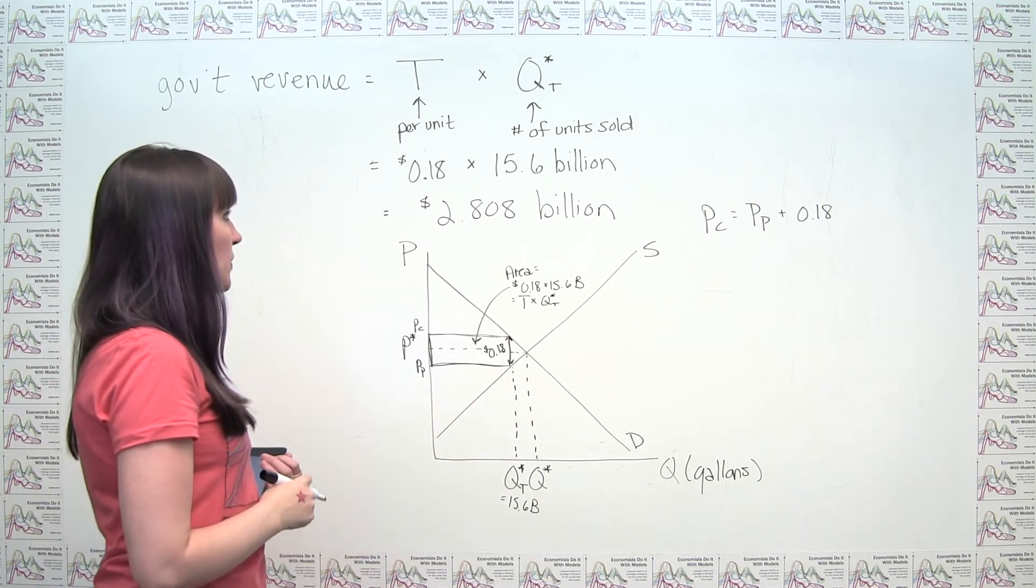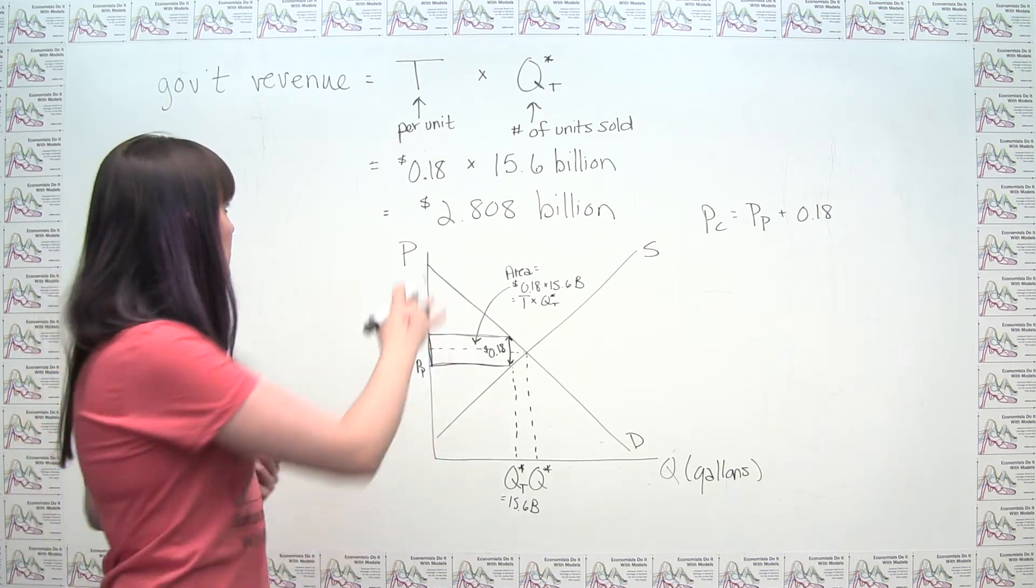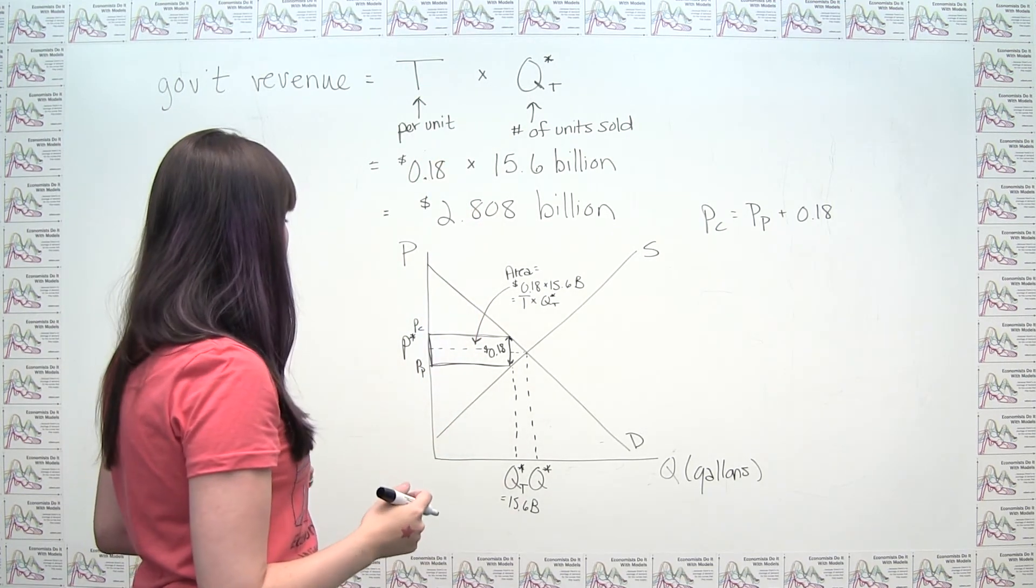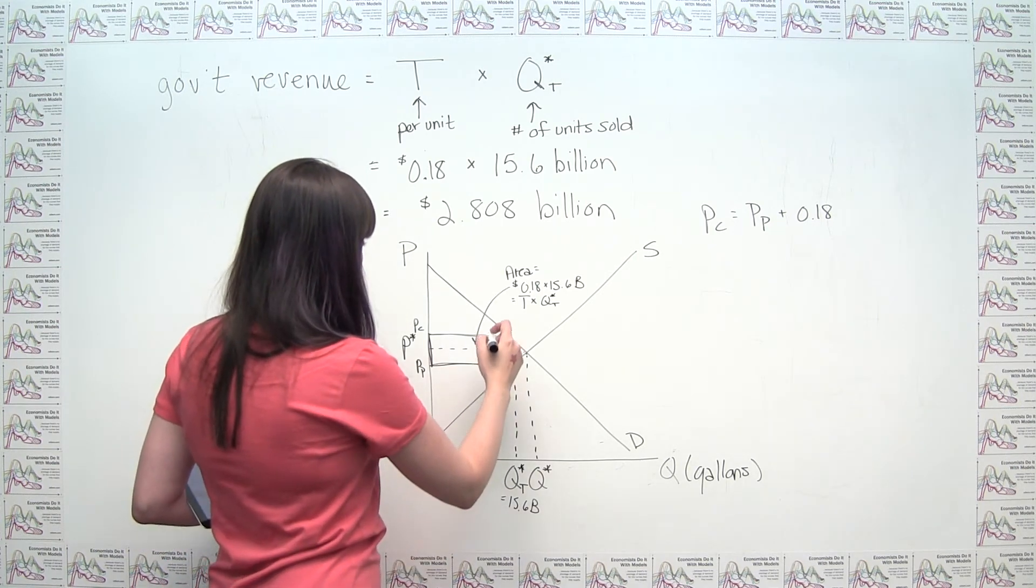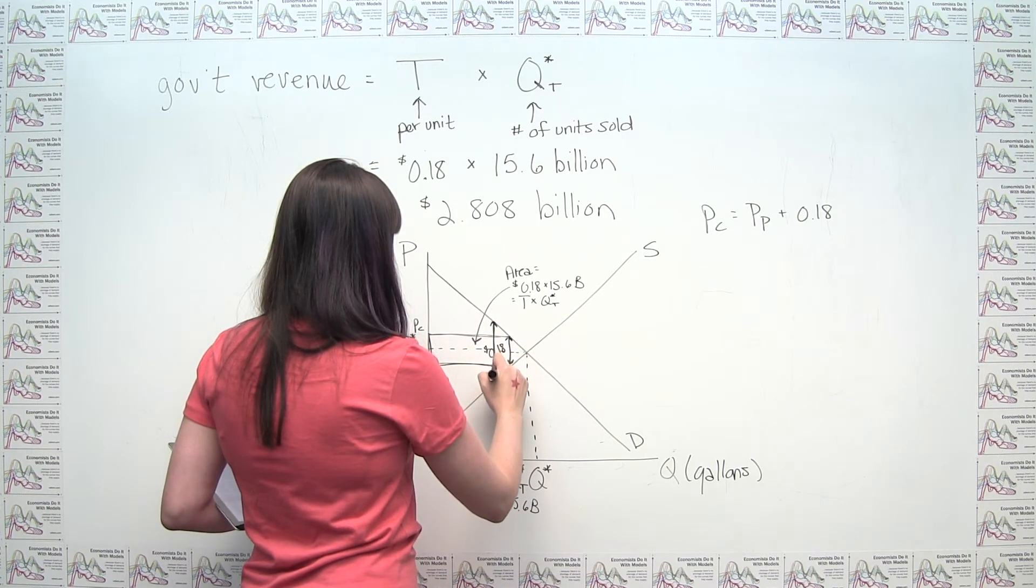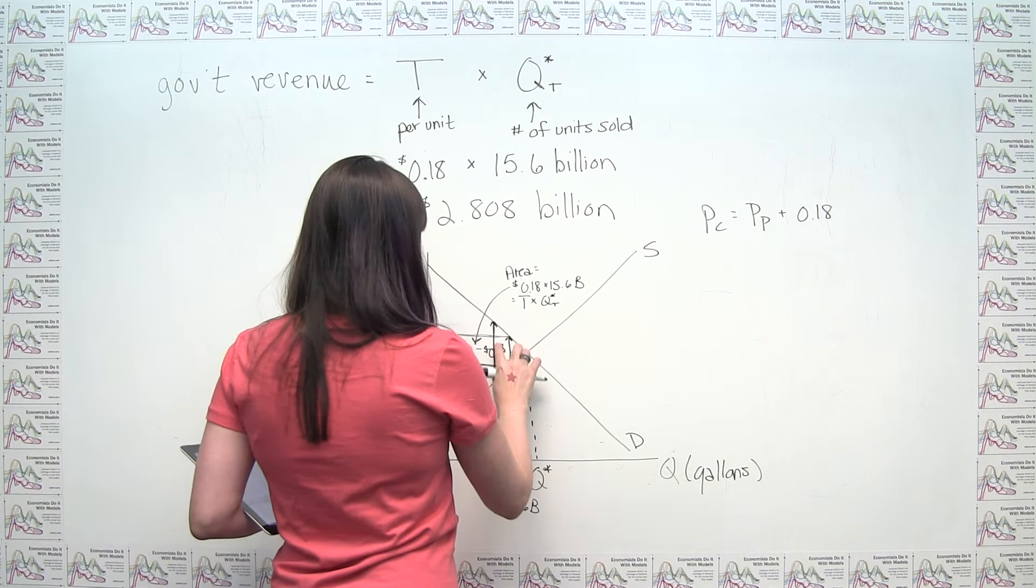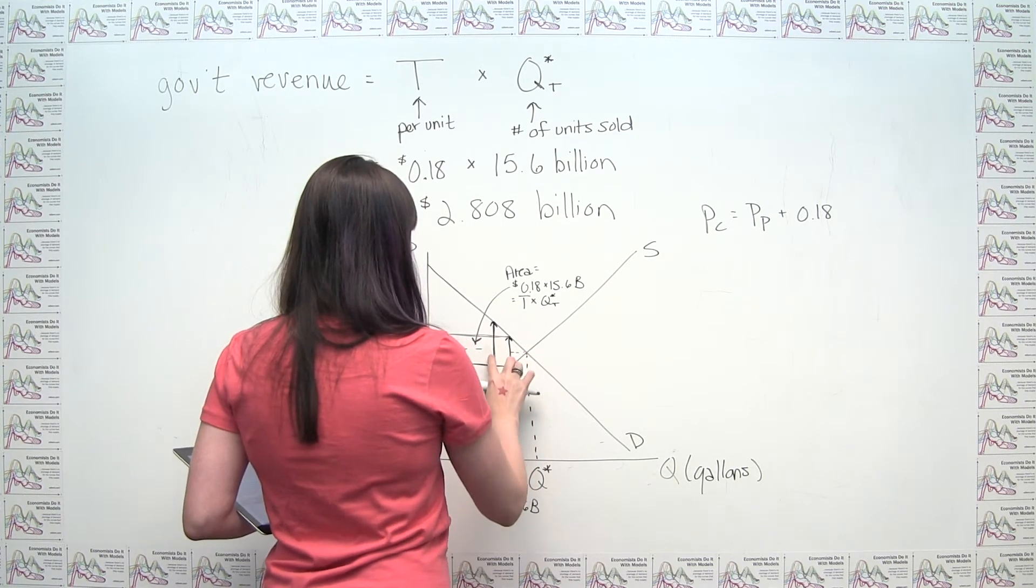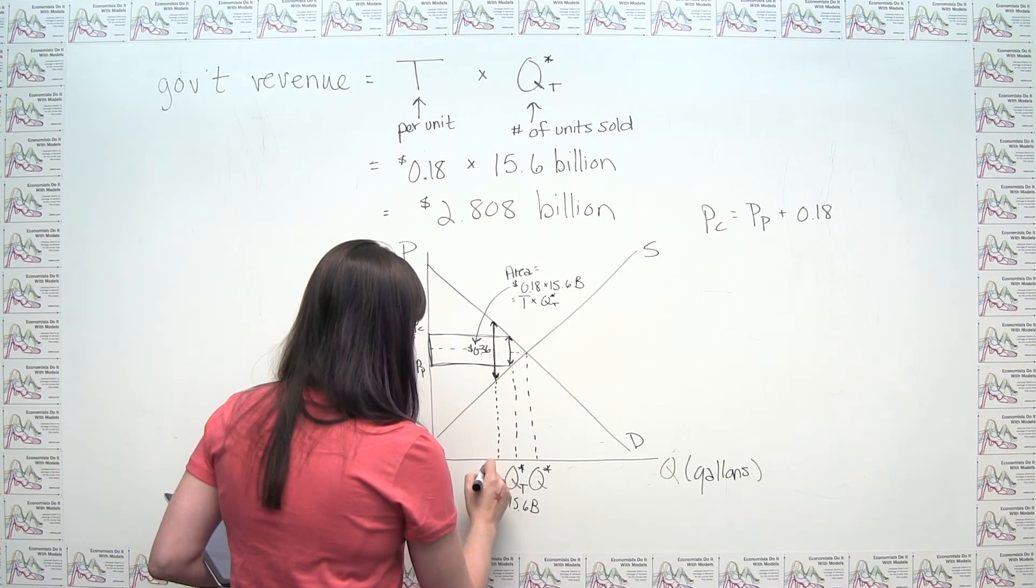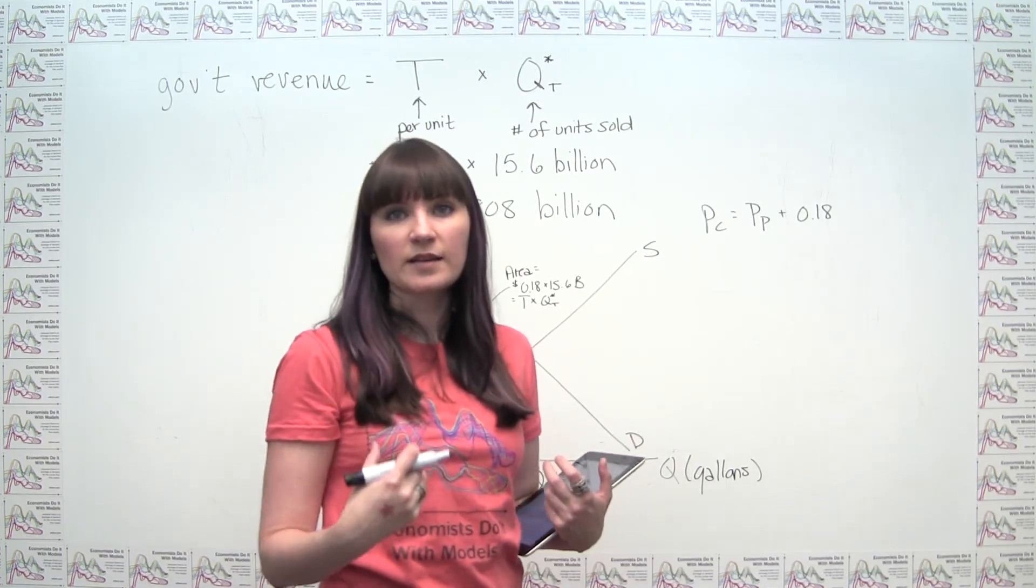So we can think about what happens when this tax doubles, when this tax goes from $0.18 to $0.36. The tax revenue is still going to be this formula, except neither one of these numbers is going to be the same. Because what we're going to see, if our tax doubles to $0.36, now our equilibrium quantity is going to be at the point where there's a $0.36 wedge between the price that the consumer pays and the price that the producer gets. Or in related terminology, the demand price and the supply price. We say, well now, when we're interested not in our $0.18 wedge, but in our $0.36 wedge, our equilibrium quantity with the tax, call this q sub t2 star, is going to be lower. Simply because larger taxes result in less economic activity, less being bought and sold.